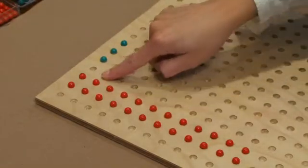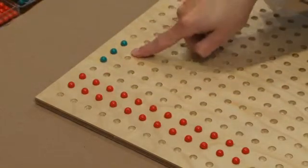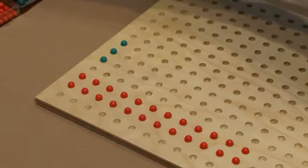For each row in the red column, I have to create a row in the green column so that I can maintain the ratio of two to three.